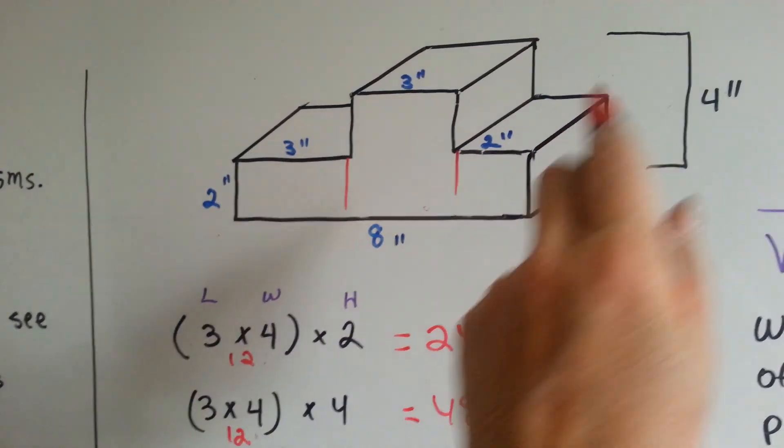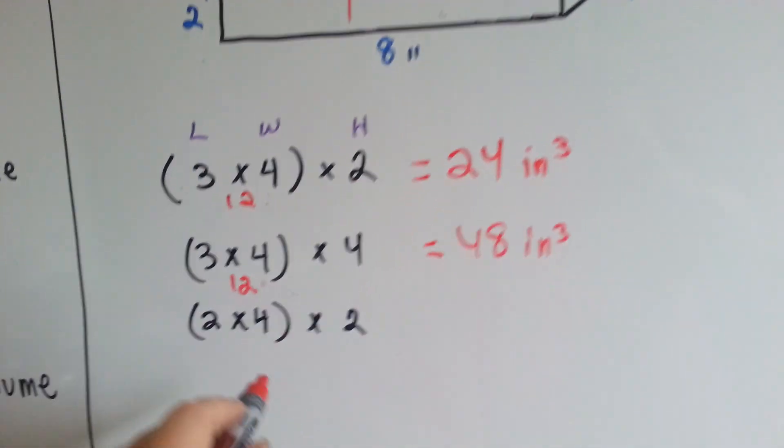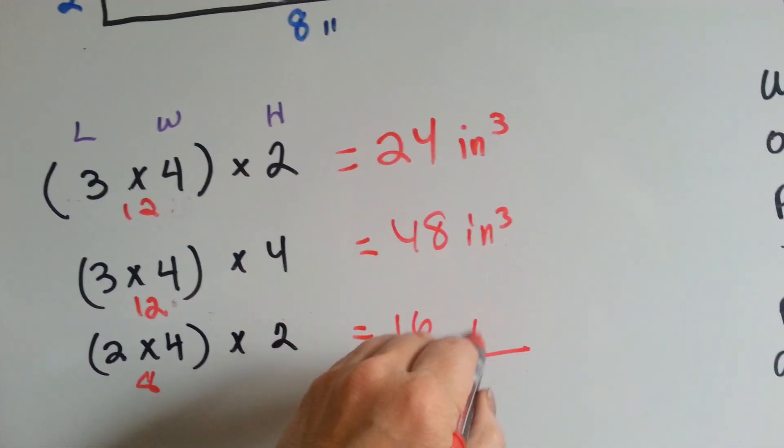And then the last one looks like a stick of butter, doesn't it? It's 2 times 4, which is 8, times 2, which is 16. We add them all up.